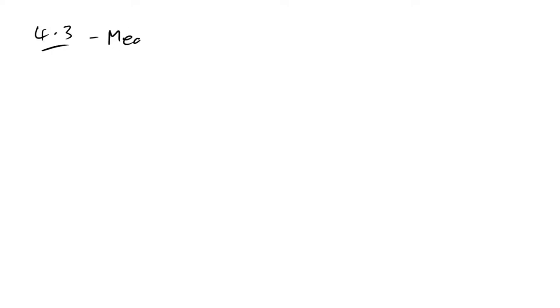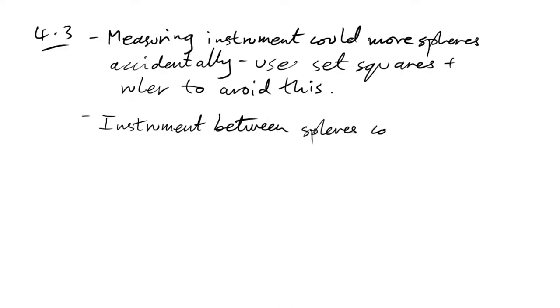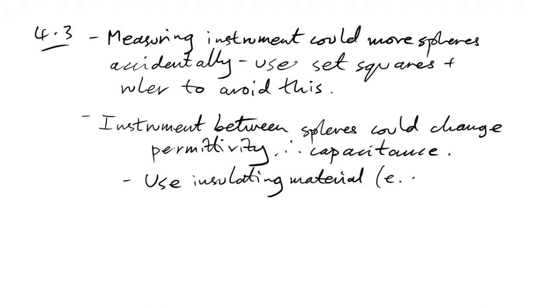One issue in measuring D is that measuring instruments like calipers could move the spheres accidentally — we could use set squares and a ruler to avoid this. Another problem is that an instrument placed between the spheres could change the permittivity, so it would no longer be just ε₀ in the equation, changing the capacitance. Using insulating material, e.g. plastic, would help avoid this — a metal instrument would allow electron movement, changing the permittivity further from free space.